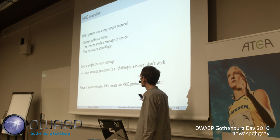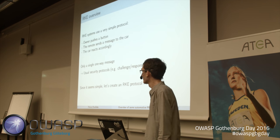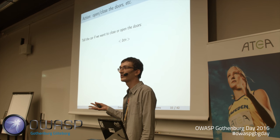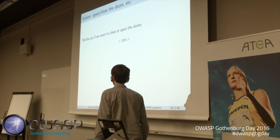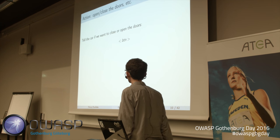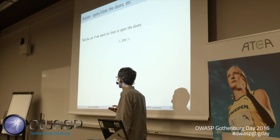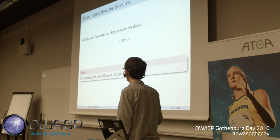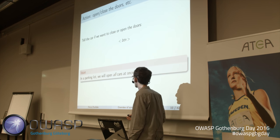Since there is only one single message, maybe we can create an RKE protocol from scratch. We want the user to press a button and the car to know which button was pressed. The first idea is just to send the button — like 1 for open, 2 for close. But here we have a problem: if I push a button, my car opens, but so do all the other cars nearby. We need a way to identify which car we want to open.